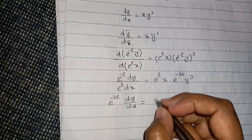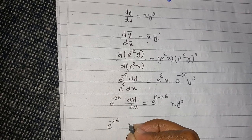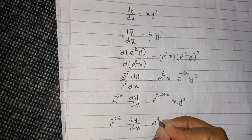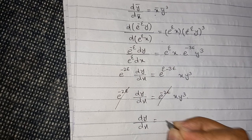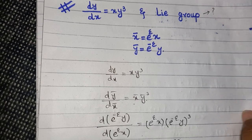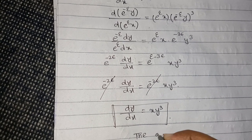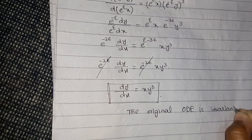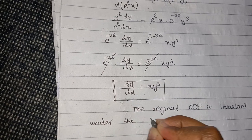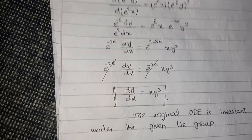Combining the exponents on the right-hand side gives e raised to the power epsilon minus three epsilon, which equals e raised to the power minus two epsilon times xy cubed. You can now cancel e to the power minus two epsilon from both sides, and you get dy by dx equals xy cubed. This is the original differential equation, so we can say that the original ODE is invariant under the given Lie group. This is your desired result.